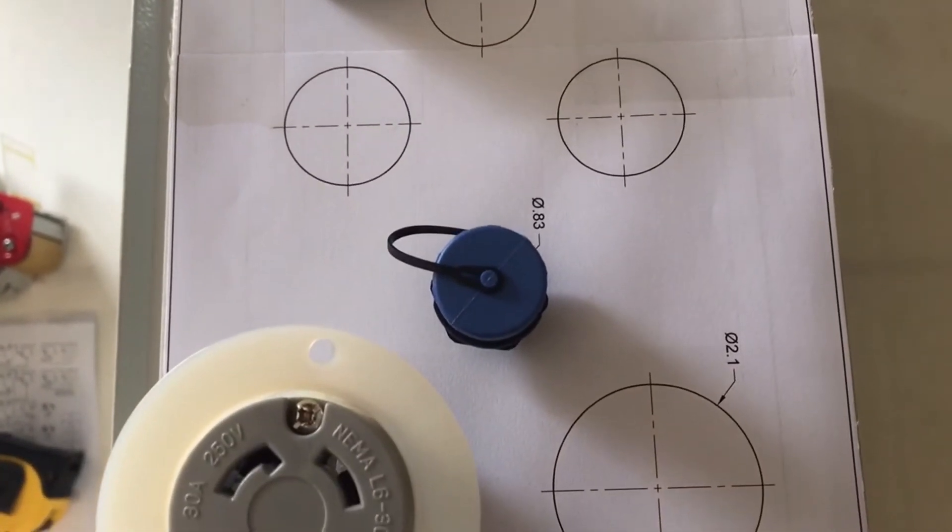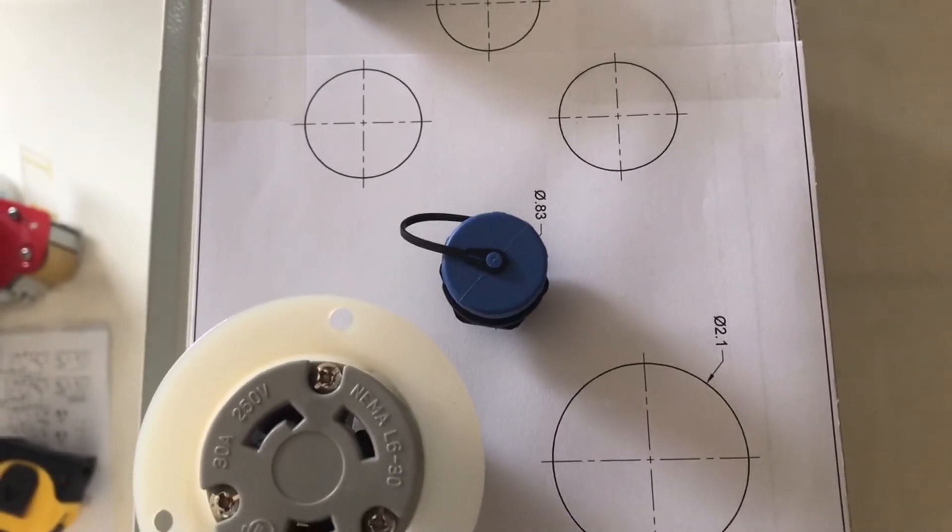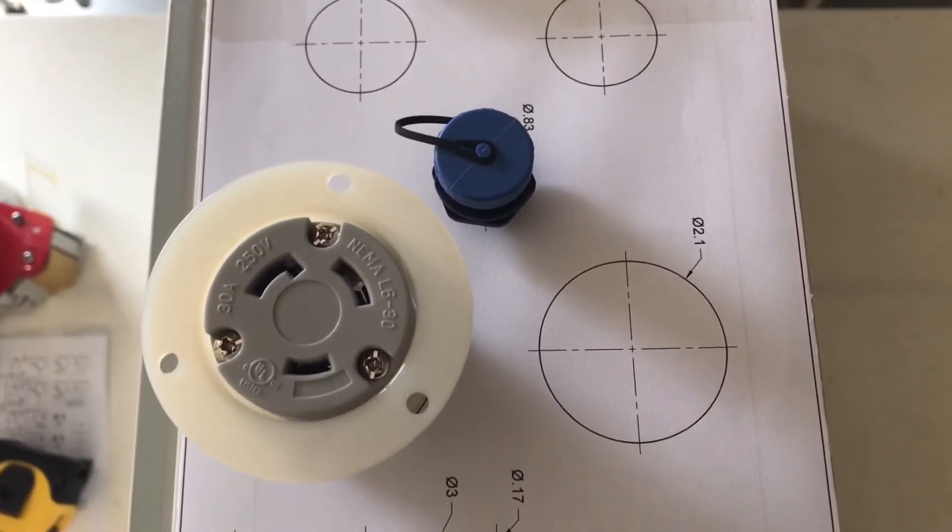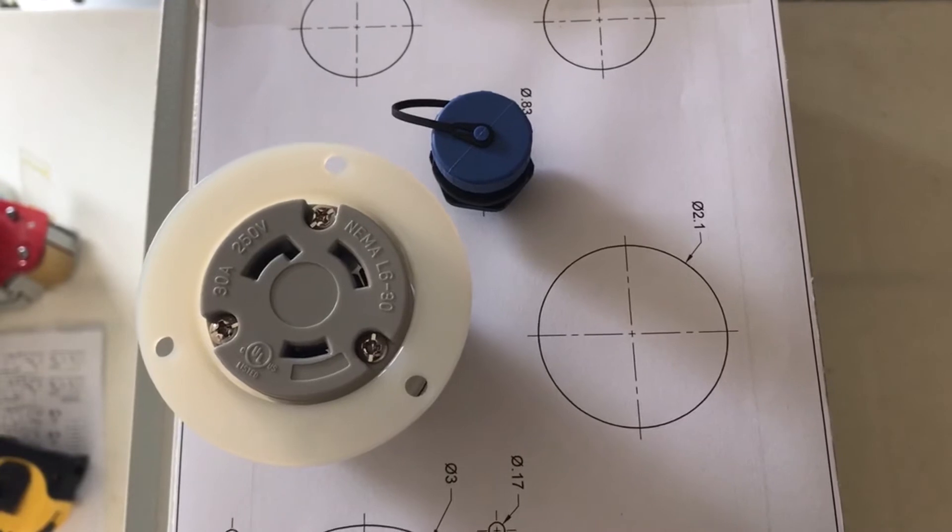Below that is the user console connector. Below that are the two L630 receptacles for the heating elements.